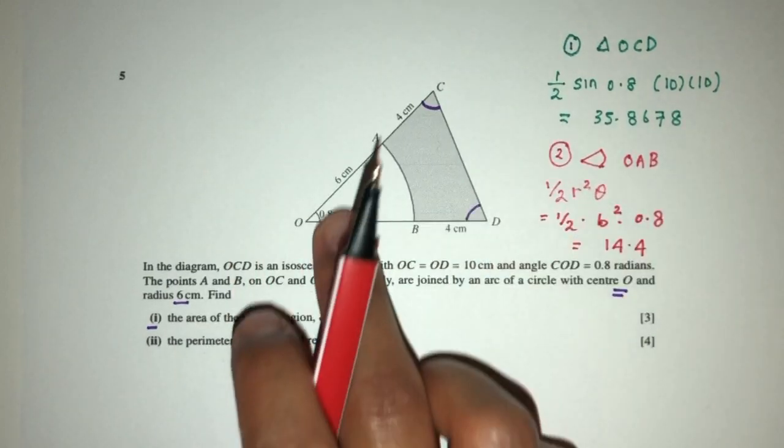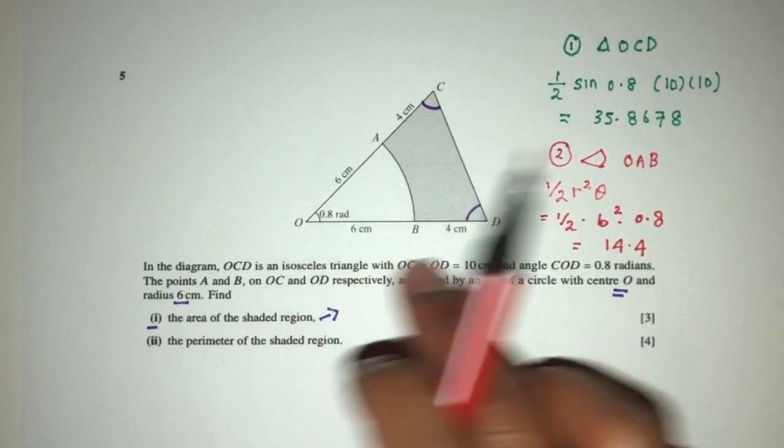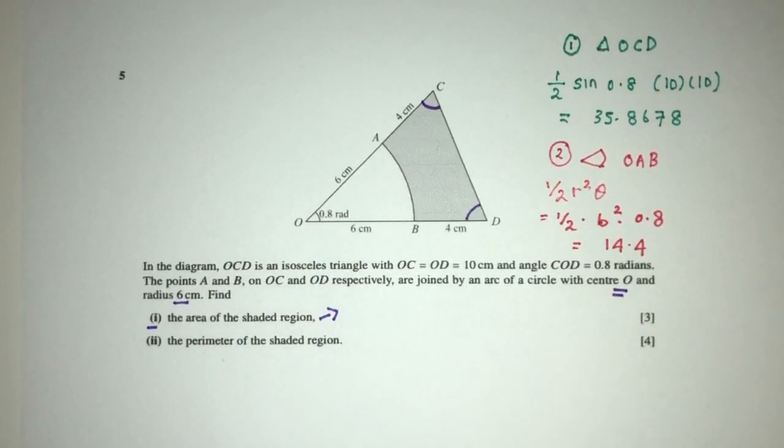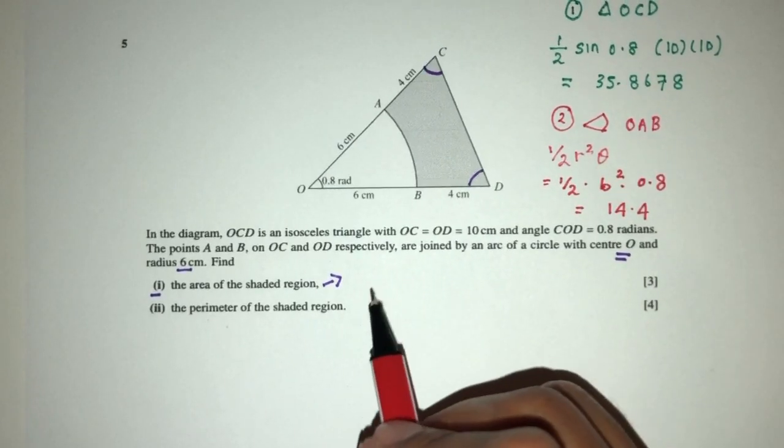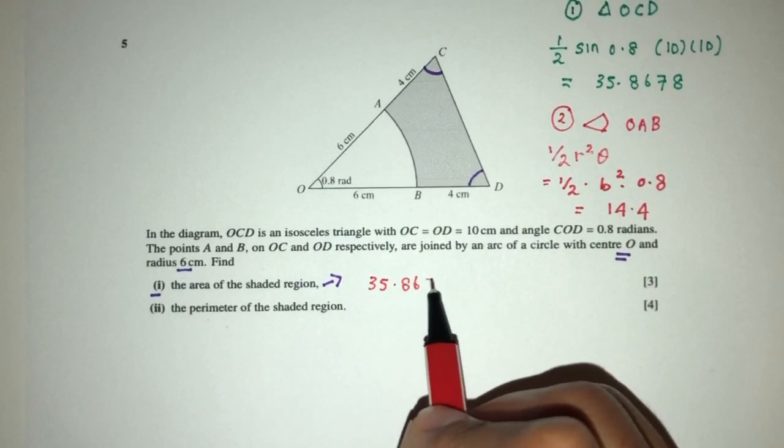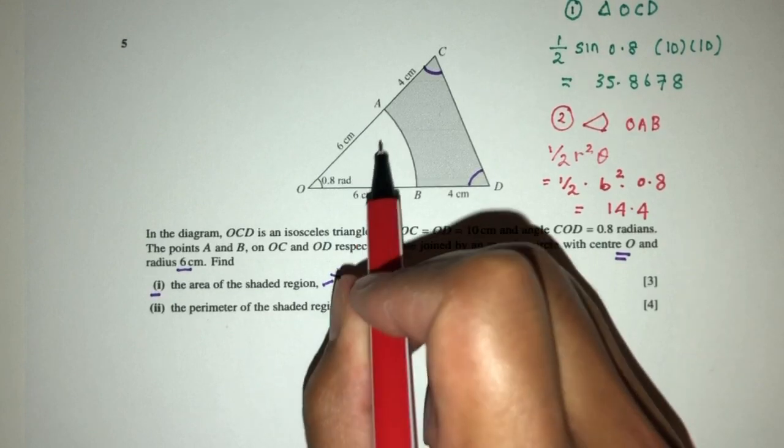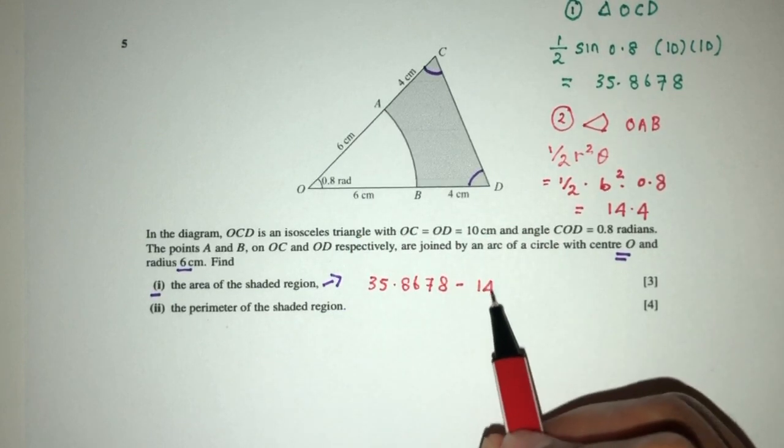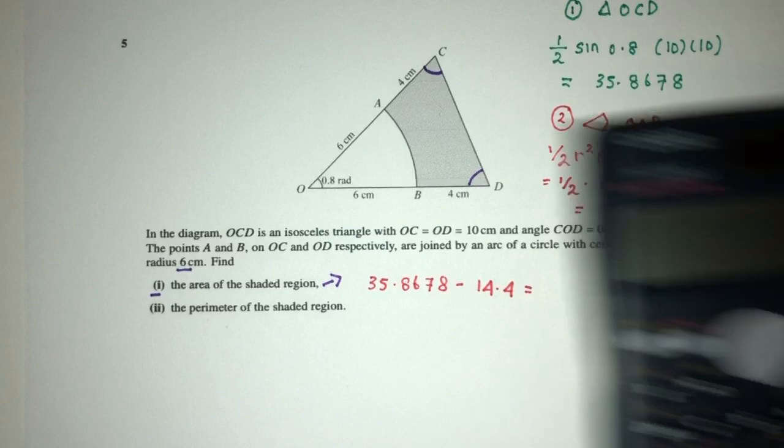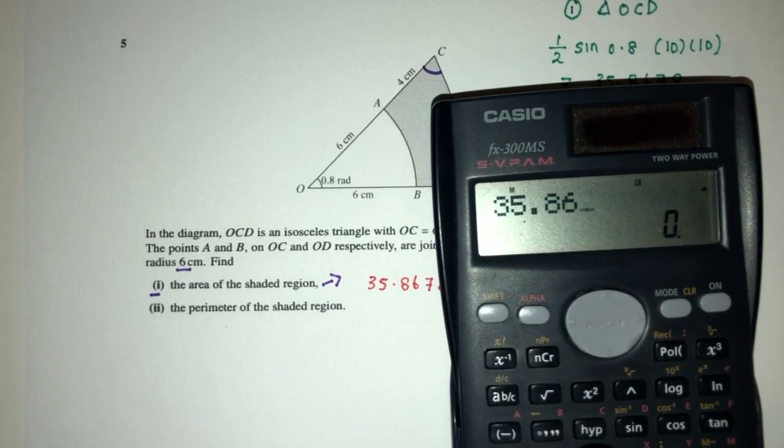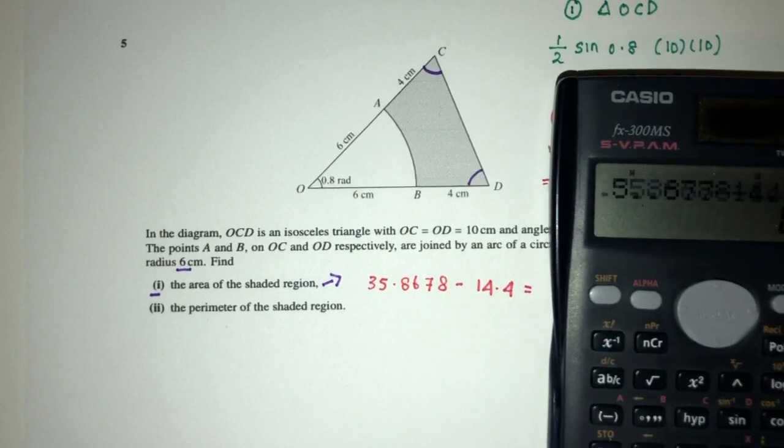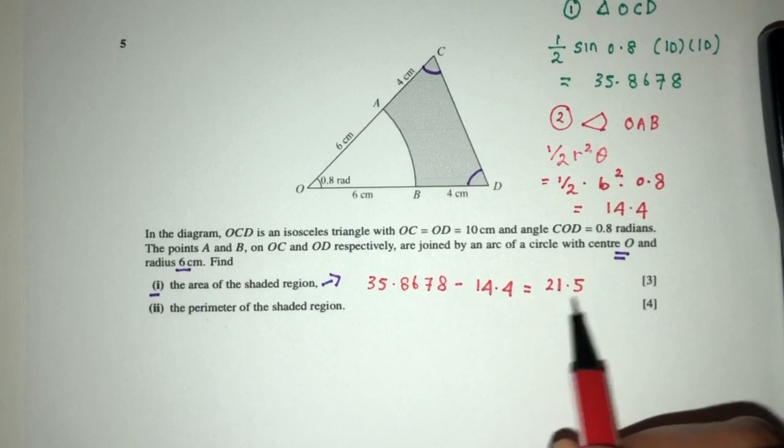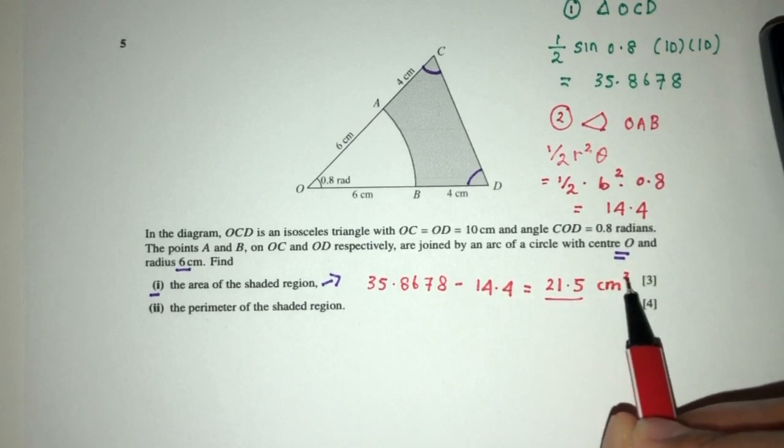So we have the whole thing, we have this sector. To get the shaded region, we take everything and minus this to get this. So number one will be 35.8678 minus 14.4, that should be 21.5, and that will be centimeters squared.